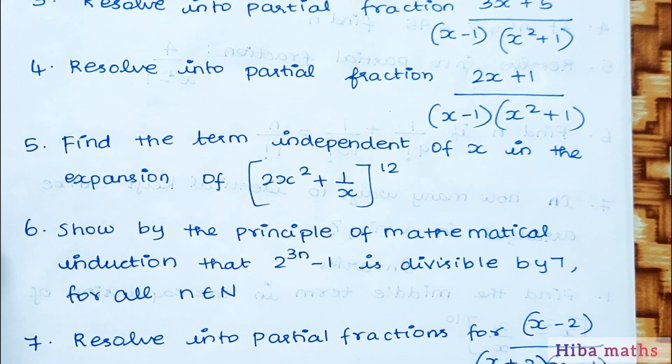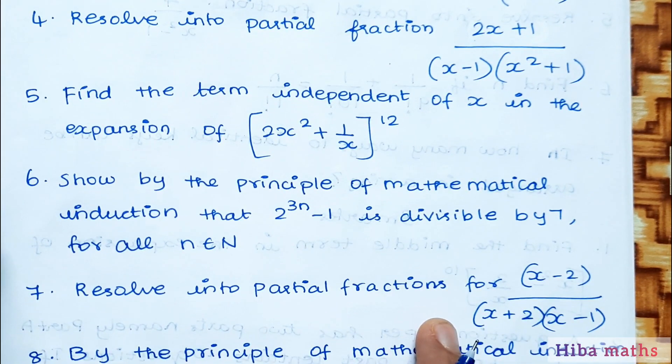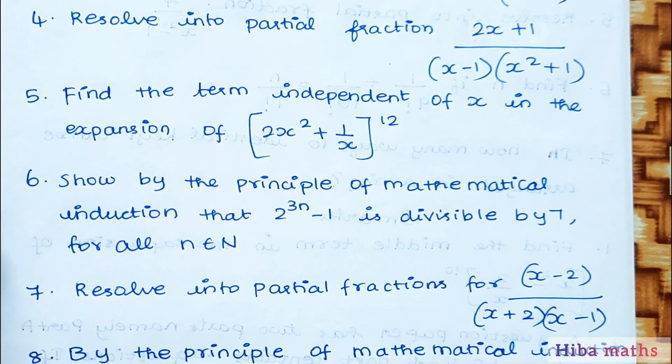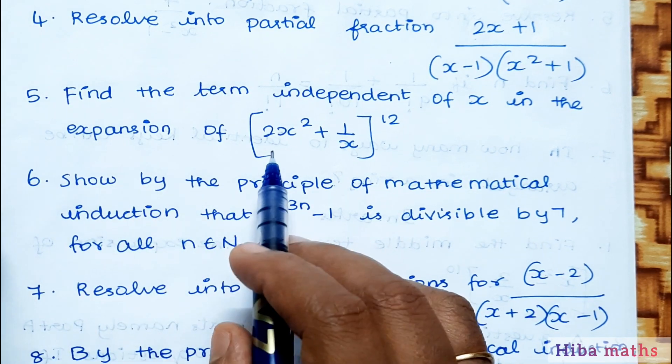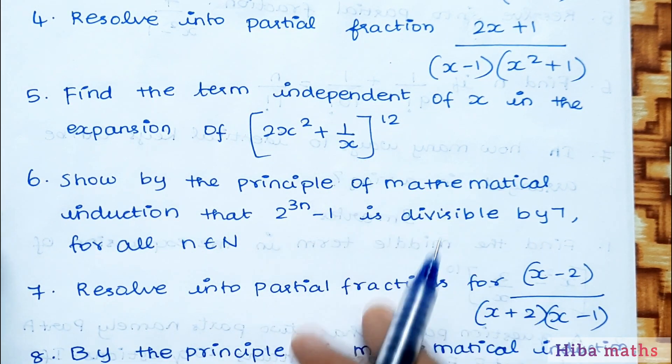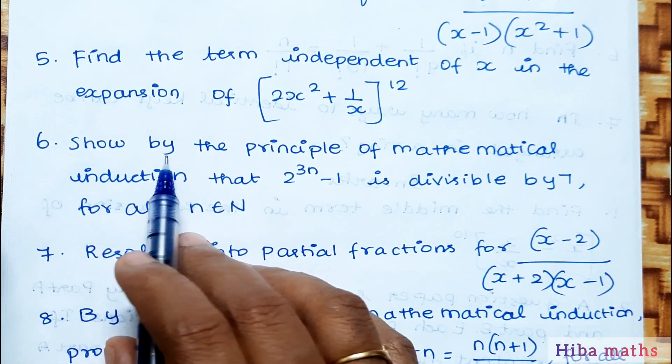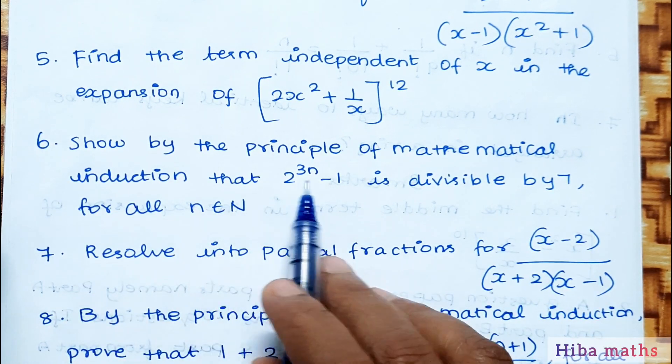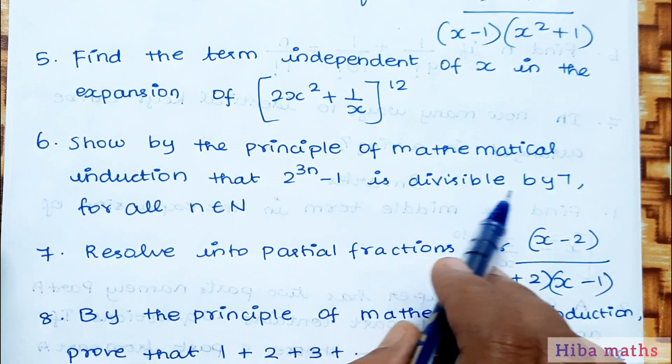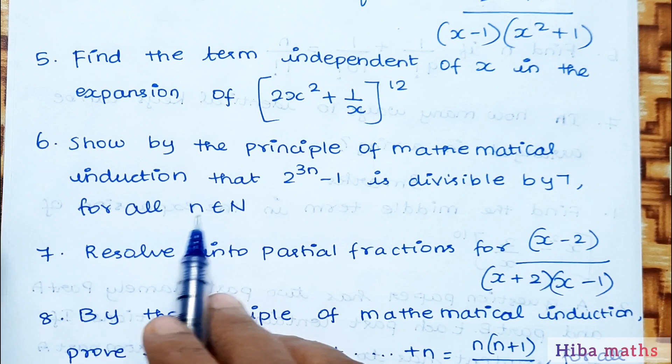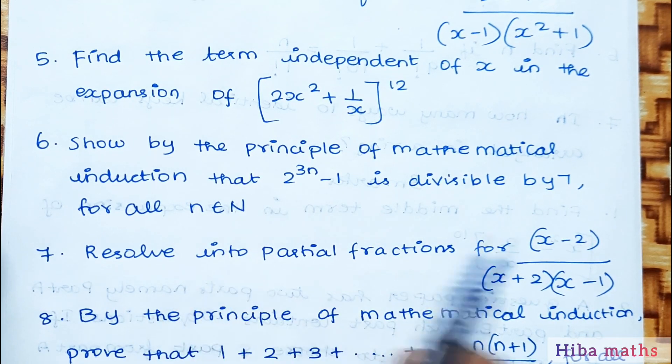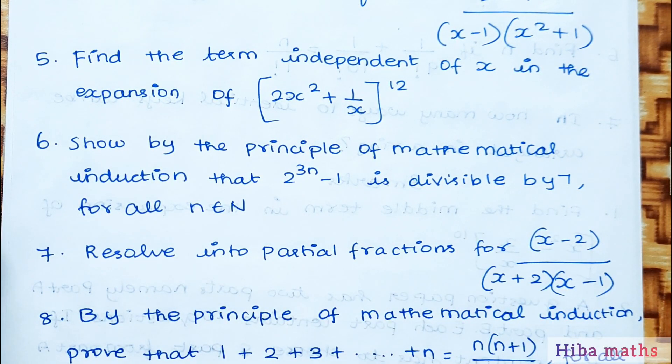For example, in miscellaneous problems, practice more: find the term independent of x in the expansion of (2x² + 1/x)^12. Show by the principle of mathematical induction that 2^(3n-1) is divisible by 7 for all n belonging to natural numbers.